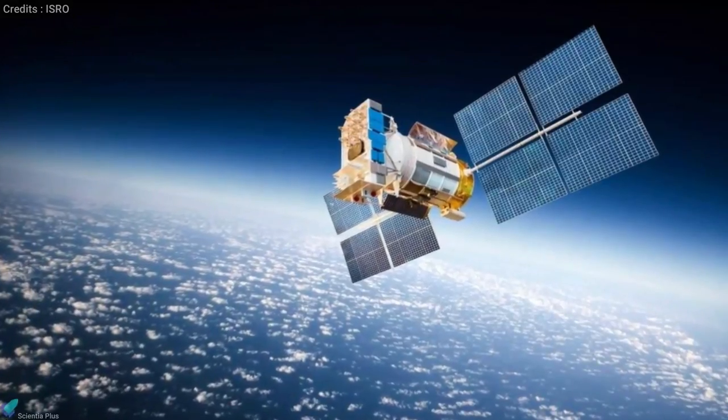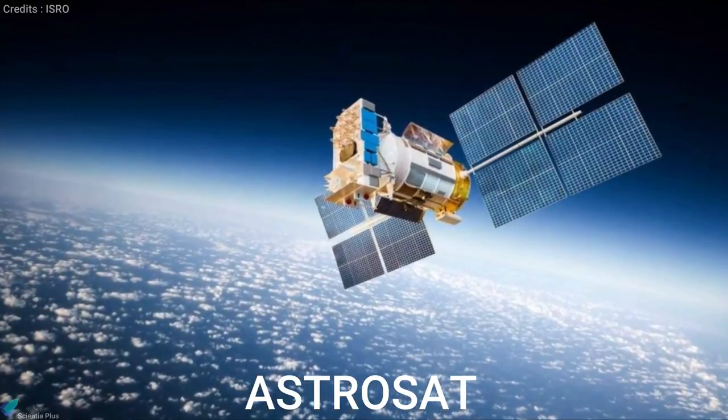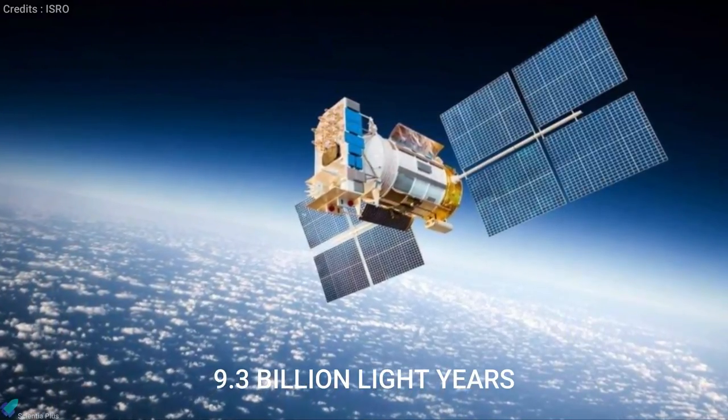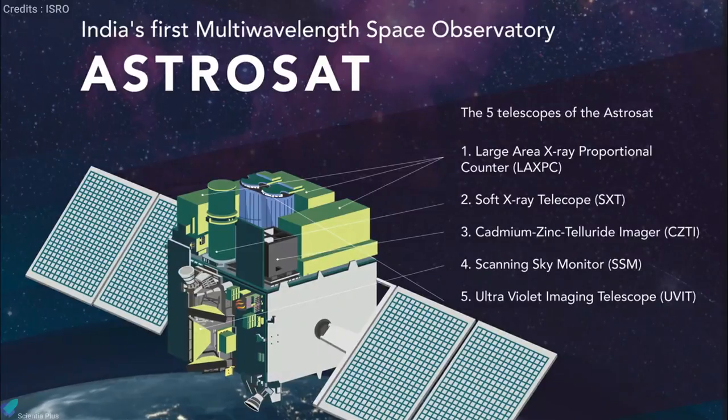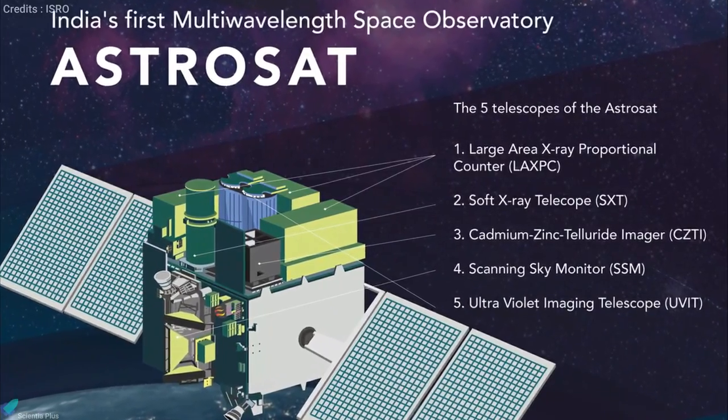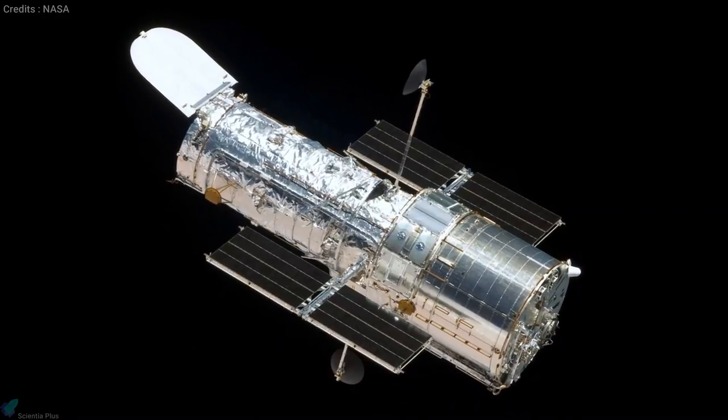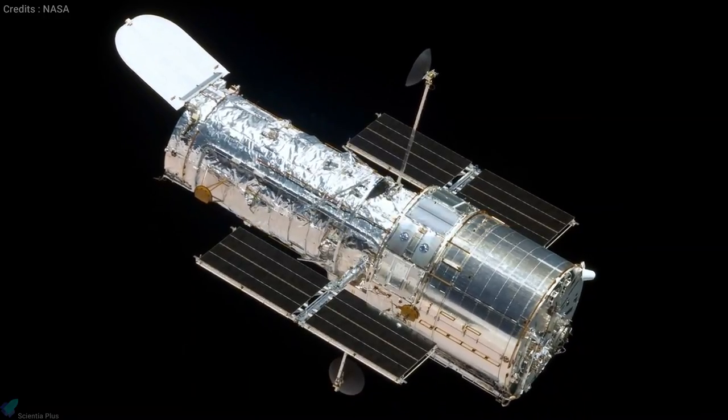India's first space telescope, AstroSat, detected ultraviolet radiation from a galaxy which is 9.3 billion light-years away from Earth. How did AstroSat achieve this milestone that even NASA's largest and most diverse Hubble Space Telescope could not do? That's the topic for today's video.